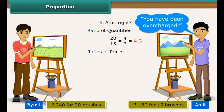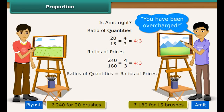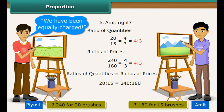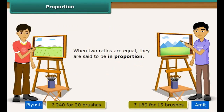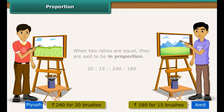Ratios in proportion are represented as 20 is to 15 proportion 240 is to 180. Ratios in proportion are read as '20 is to 15 as 240 is to 180.' Each number used in a proportion is called a term. 20, 15, 240, and 180 are the terms. The first and last terms are called the extreme terms; the second and third terms are called the middle terms.